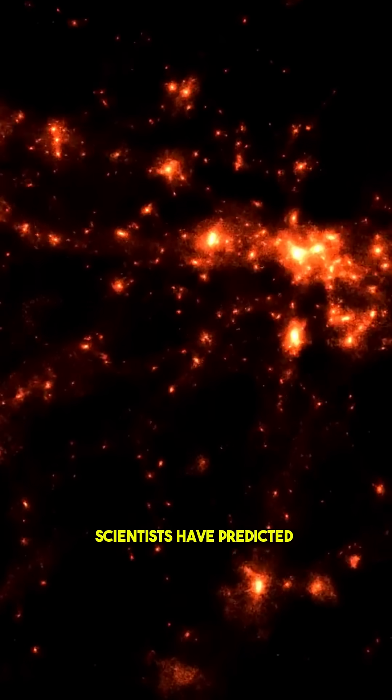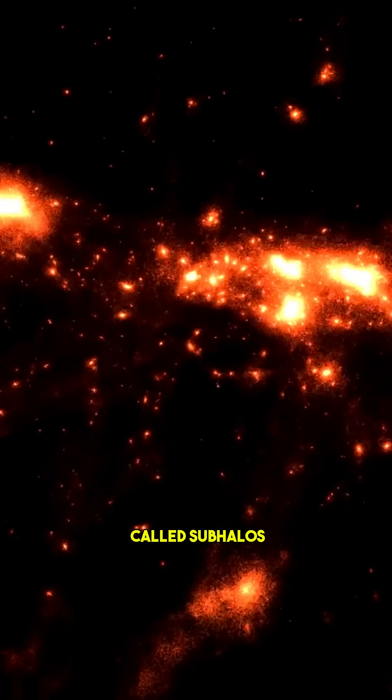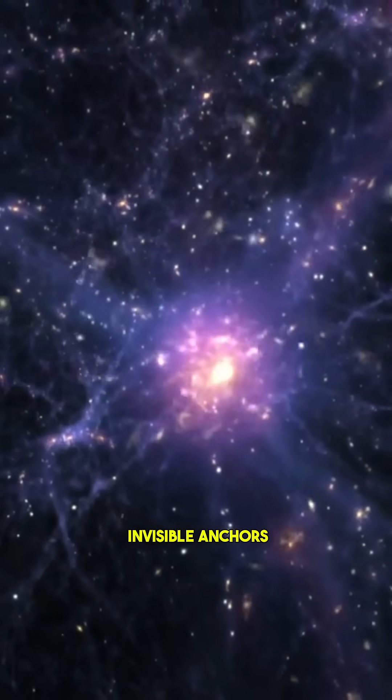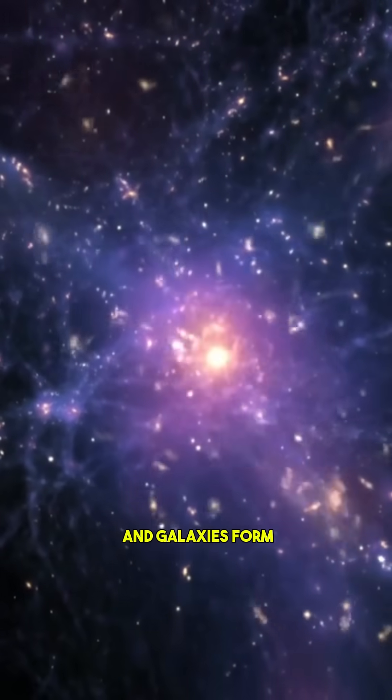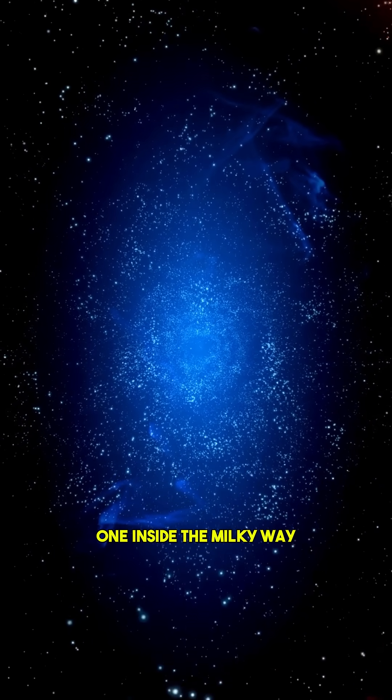For years, scientists have predicted that galaxies should contain smaller clumps of it, called subhalos. These are like invisible anchors, shaping how stars and galaxies form. But until now, no one had clearly found one inside the Milky Way.